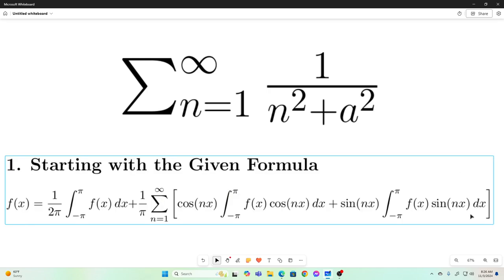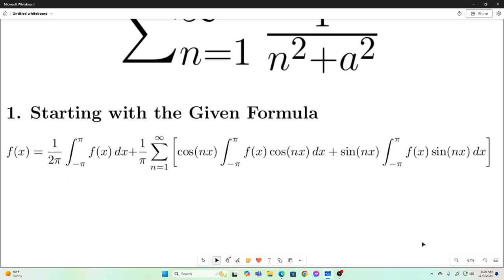We're going to start with this formula. This is just the Fourier series formula for any function f of x on the interval negative pi to pi, meaning that any function f of x can be represented by this function right here on the interval x is equal to negative pi to pi. I'll try to remember to link to the video where I showed why that's true.